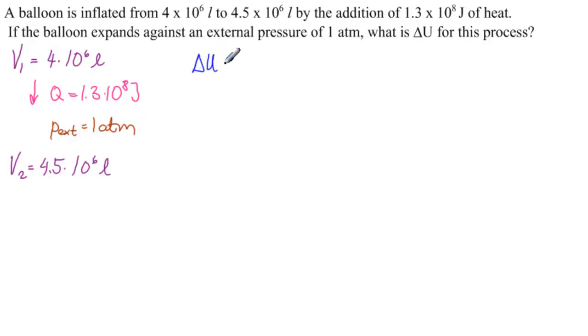Well, we know delta U is equal to Q plus W. We're given Q, so what we're looking for is W. So we know that this is 1.3 times 10 to the 8 joules plus W. And we have W equals minus P external DV. And we're given our volumes. So all we have to do is be very careful of our units.